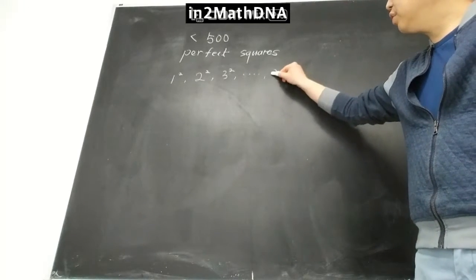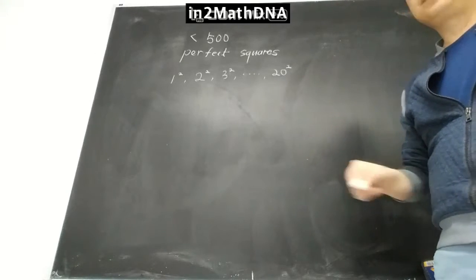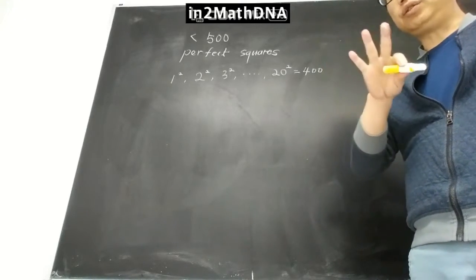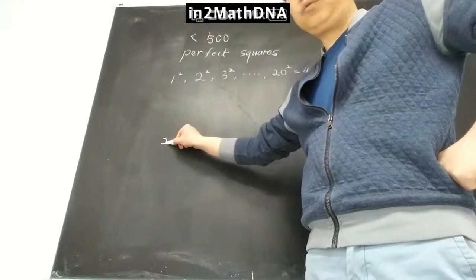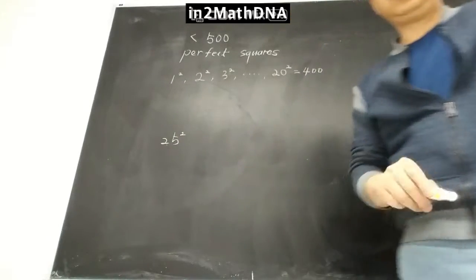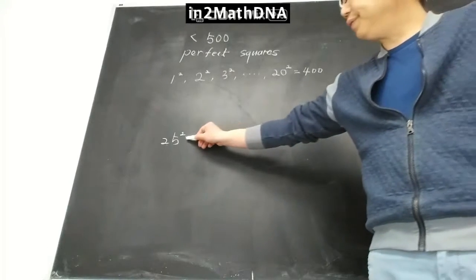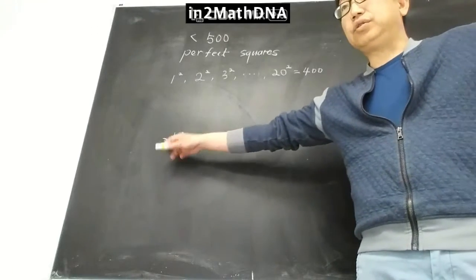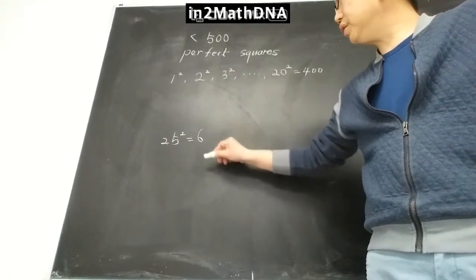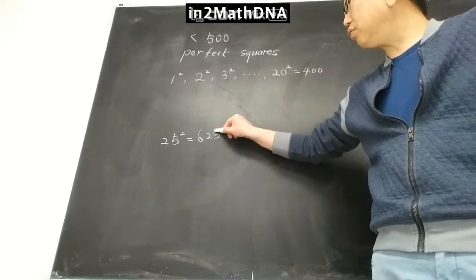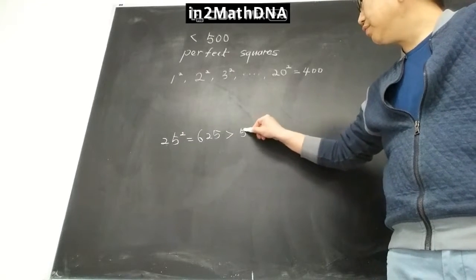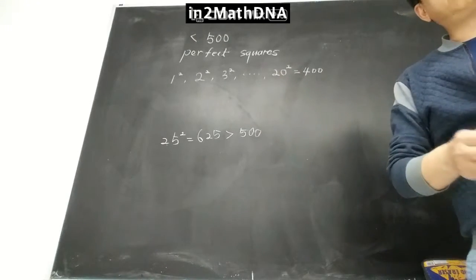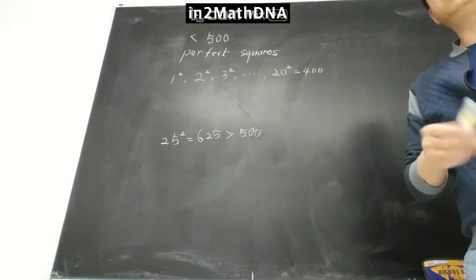You can first try 20 squared, which is 400. Even though you could do 21 squared, I want to first check 25 squared. For 25 squared, the last two digits are always 25, and the first digits come from 2 times 3, giving 625. This is greater than 500, so after 20 squared you have to check 21 squared, 22 squared.